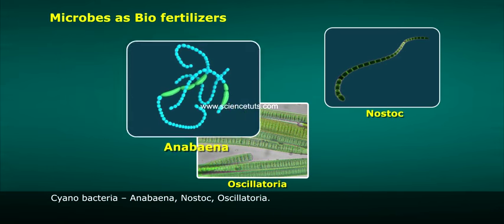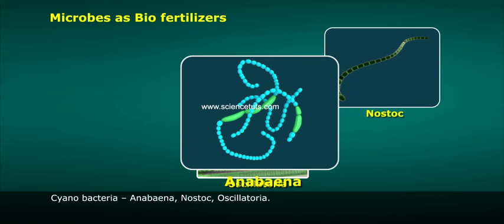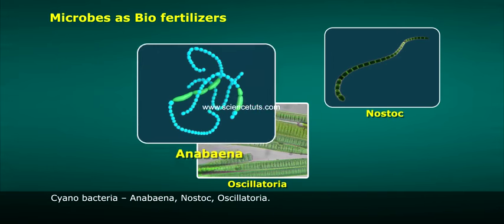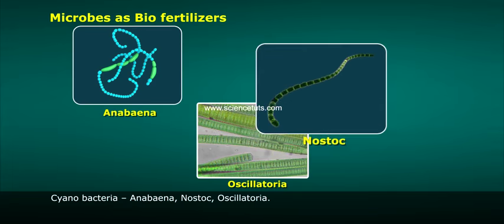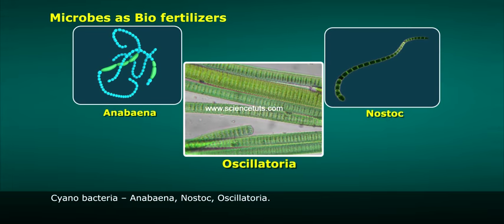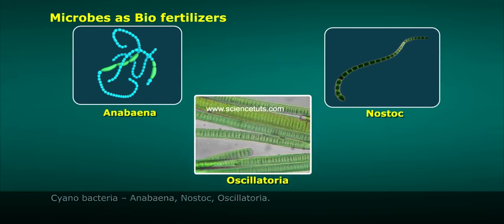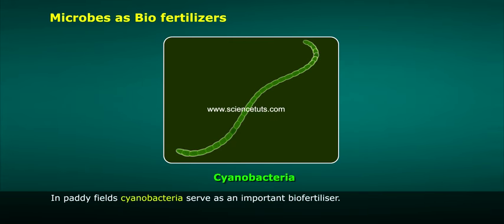Cyanobacteria such as Anabaena, Nostoc, and Oscillatoria are also important biofertilizers. In paddy fields, cyanobacteria serve as an important source of nitrogen.